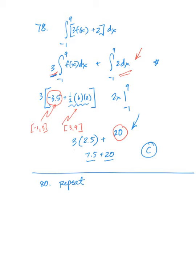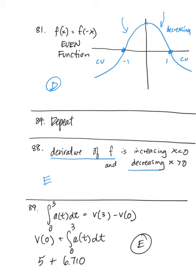In number 81, we're given a table for f, f prime, and f double prime, and told f of x equals f of negative x — an even function. Graphing this: decreasing and concave down from 0 to 1, decreasing and concave up from 1 to 2, then mirroring that behavior on the other side. This gives choice D — points of inflection at both negative 1 and positive 1. In number 88, the derivative of f is increasing when x is less than 0 and decreasing when x is greater than 0. Looking at choice E: slopes go from very negative toward 0 — increasing — then from near 0 back to very negative — decreasing. That's why it's choice E.